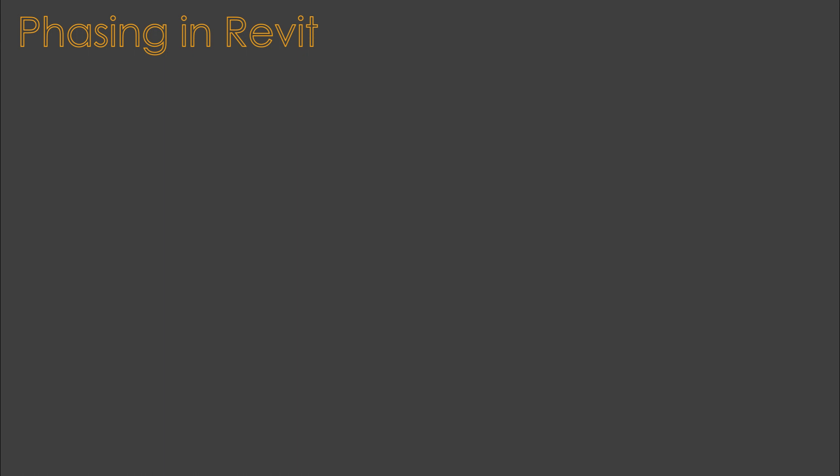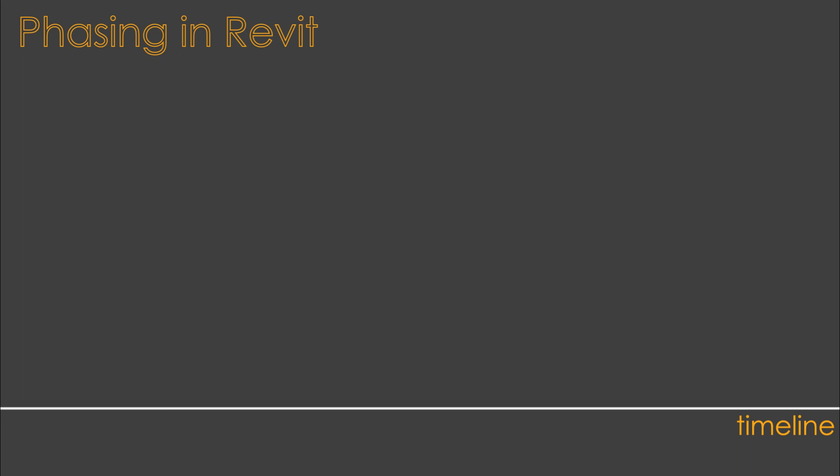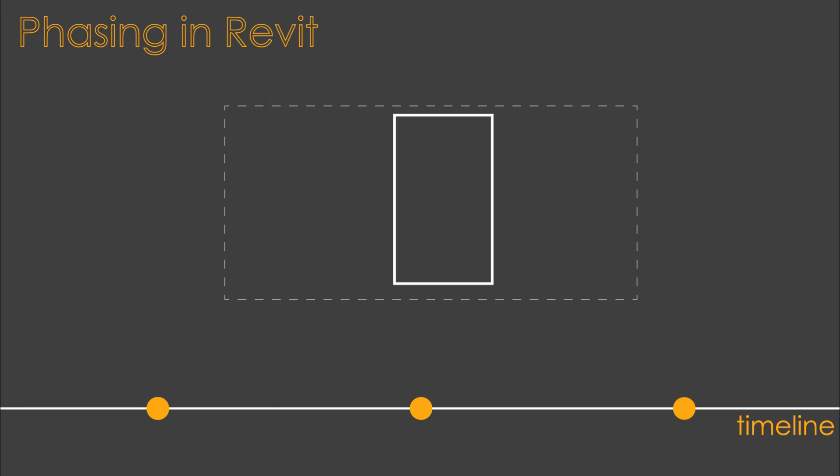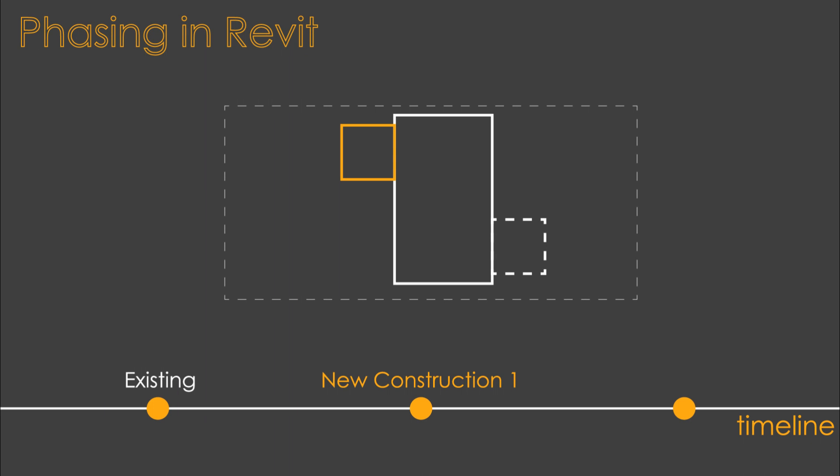Let's explain what phasing is. Phasing brings the timeline into Revit and it adds some points or phases to your whole project. Let's say you have some property line on which you have a house, and this house has a little annex added there. The main yard is on the right side of the house, but the client wants to flip things around and have the main yard on the left side.